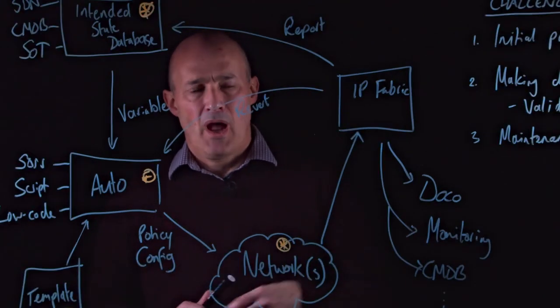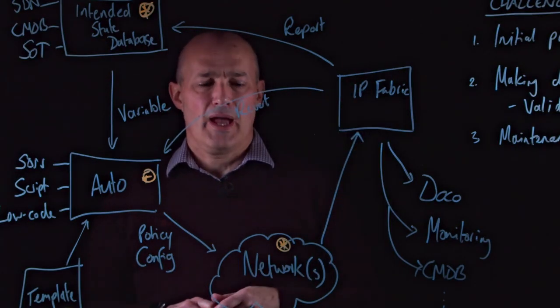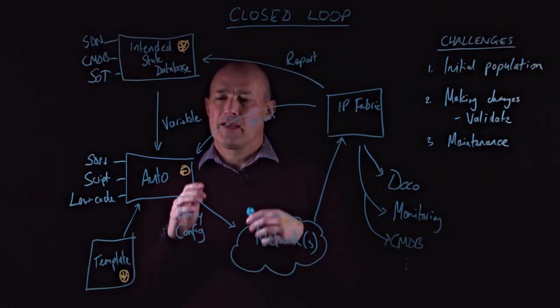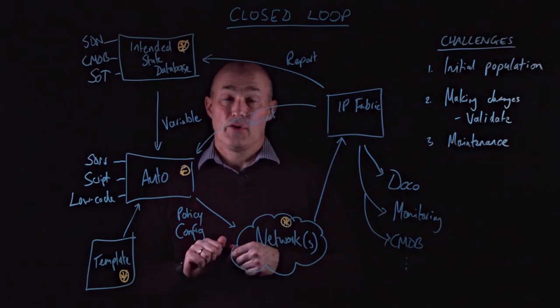And so that then gives you that full closed loop scenario. And so you can see, IP Fabric here has formed an integral part of that closed loop automation that completes the picture for your network operations.